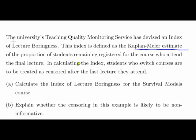So that is a little bit weird. So they just switch out, so they're not considered, it's not because they found the lectures boring, it's because they had a choice and they felt that something else was better for them. So the first question is calculate the index of lecture boringness, which is in other words the Kaplan-Meier estimate, and then explain why the censoring in this example is likely to be non-informative.